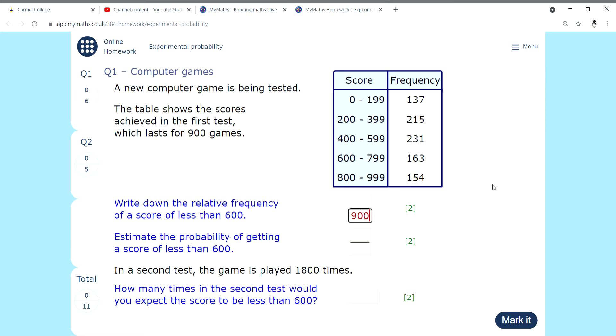I need to just add them up, so 137 plus 215 plus 231, and I've got 583. Put it in the right place, 583.